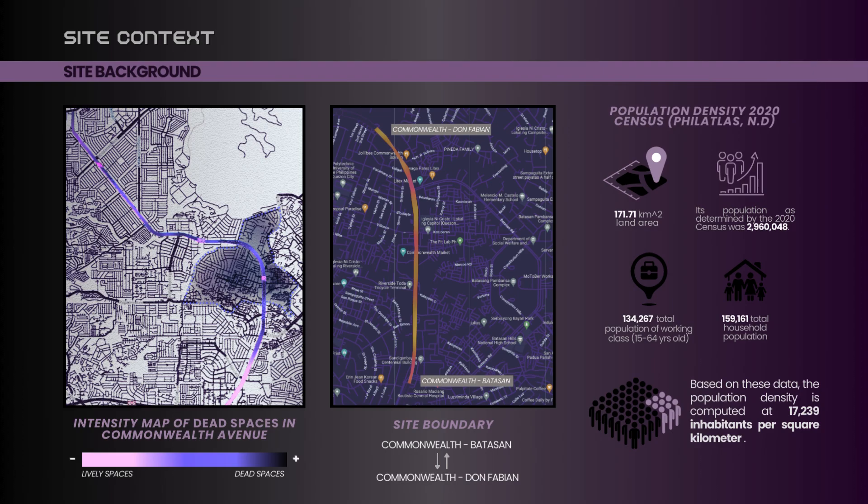For our site background, the first map shows the intensity level of lively spaces versus dead spaces in the avenue. When a street or space is tagged as a dead space, it means that it doesn't have its own characteristics and lacks interaction with its users and environment, such as the lack of signages, wayfinders, greeneries, and the likes. The dark violet spots show that there are observed dead spaces present commonly in the avenue.